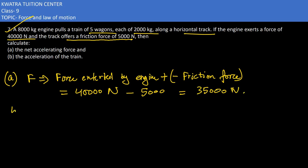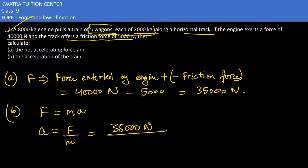Secondly, it's asking to find the acceleration of the train. As we know the formula F = ma, I can easily find a by dividing F by m. F in this case is 35,000 N and mass is 8000 plus 10,000 because five wagons are there, each 2000 kg. So 35,000 divided by 18,000 gives 1.94 m/s².